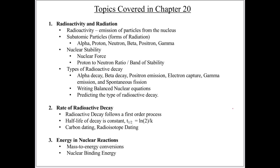Then we're going to talk about nuclear stability, and we're going to look at how we can figure out what type of decay mode an atom will want to proceed by, depending on its atomic number and its number of neutrons.